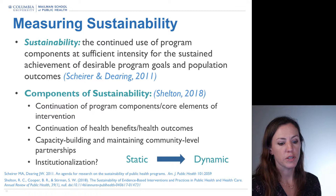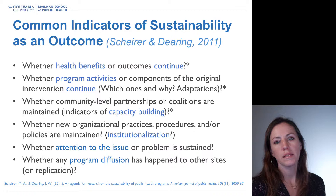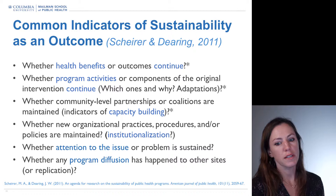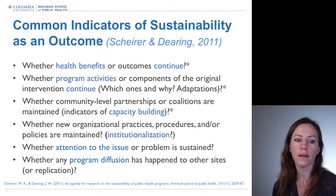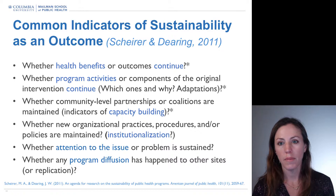When we look at common indicators of sustainability as an outcome, Marianne Shire and Jim Deering have put forth a range of options. The most common ones reflect the indicators we just discussed. Do the health benefits or outcomes continue? Are they maintained, do they remain level, are they improved upon over time, or do they decrease?